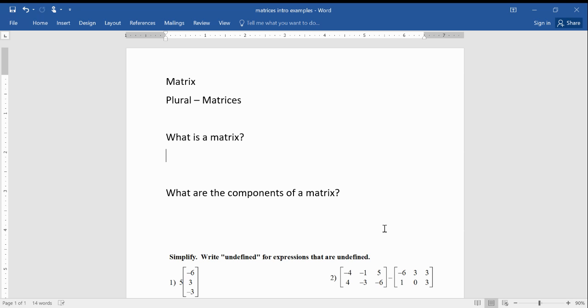So anyway, without further ado, let's talk about matrices. So a matrix is one matrix, but if you start talking about more than one, we use the word matrices. It's one of those little language things where we change the X to C and make it plural. So a matrix would just be one, more than one is matrices.